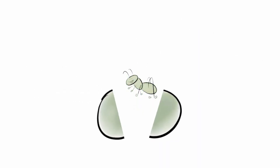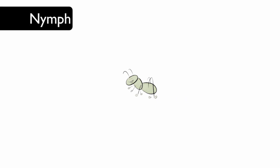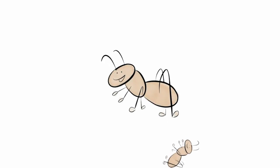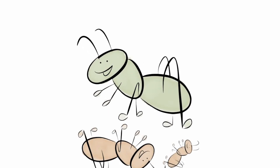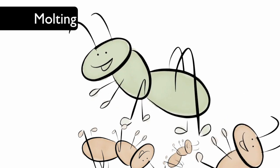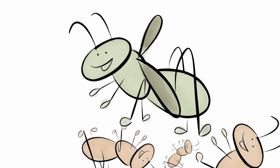The egg hatches into a nymph. The nymph looks like an adult insect, except it may be lacking organs such as wings. As the nymph grows, it will shed its exoskeleton during the process of molting. A grasshopper may molt several times before becoming a fully developed adult.